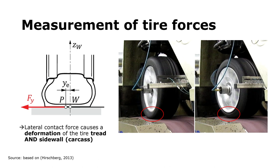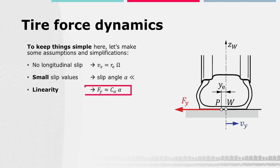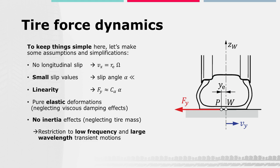Especially the deformation of the carcass is hard to neglect. To keep things simple, we assume pure lateral slip — no longitudinal slip — which means that the longitudinal velocity Vx is equal to the rotational speed omega times the effective tire radius Re. Additionally, we assume only small slip values or slip angles, so we can assume linear tire force transmission, meaning the lateral tire force is described by the cornering stiffness C_alpha times the slip angle alpha. As we already know, a tire shows viscoelastic deformation behavior, but to gain basic insight it is enough to assume pure elastic behavior. Finally, we also neglect inertia effects, i.e., the mass of the tire. As a result, the following considerations are only valid for low frequency and large wavelength motions.